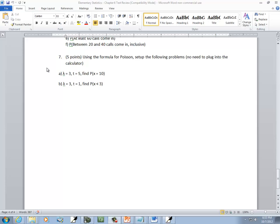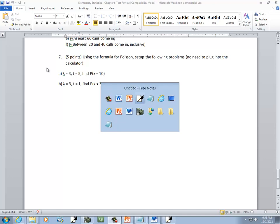Let's take a look at our seventh type. This is using the formula for the Poisson distribution for probabilities.